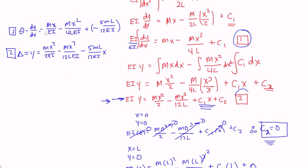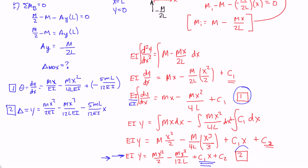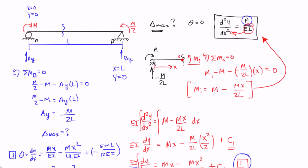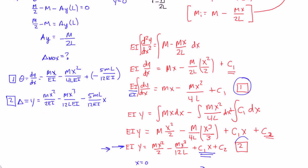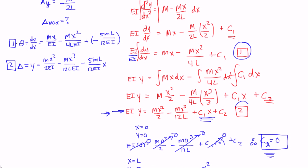Now our question in the beginning of the problem is, what is delta max? Delta max occurs where the slope is equal to 0, so we need to find, we need to find an x value, we need to find where along this beam, or at what point x, is the slope equal to 0, and we can do that using our new equation 1.